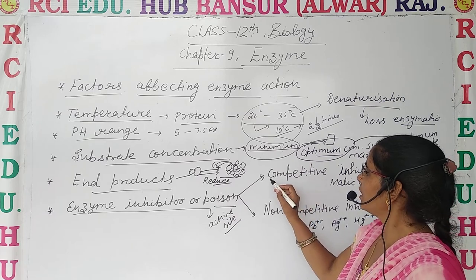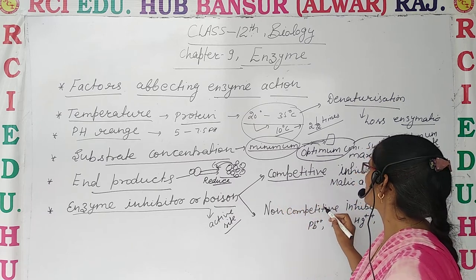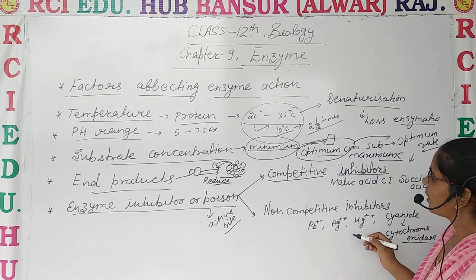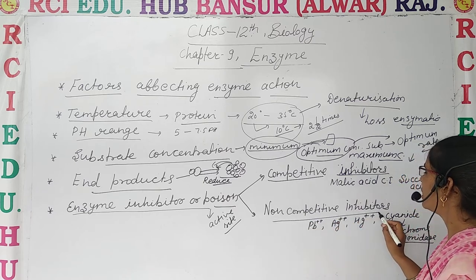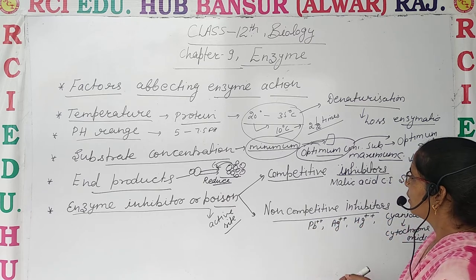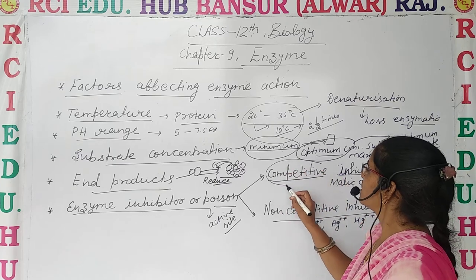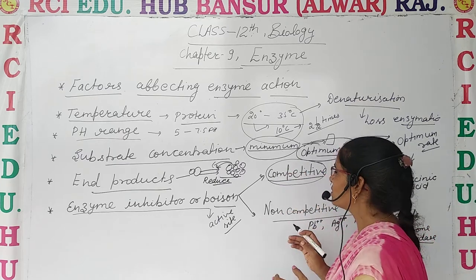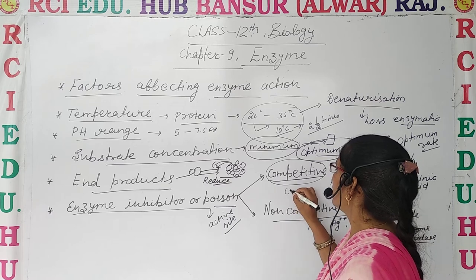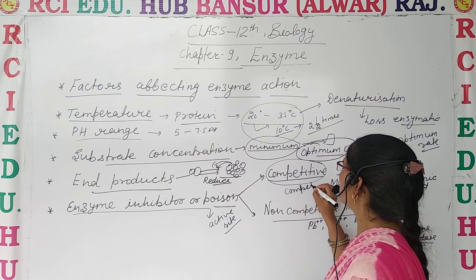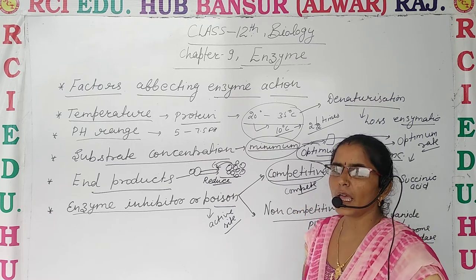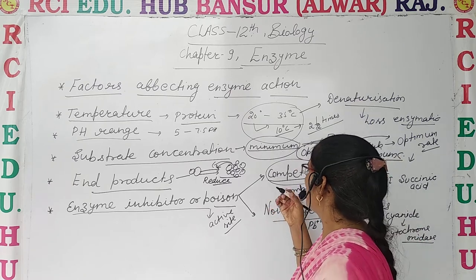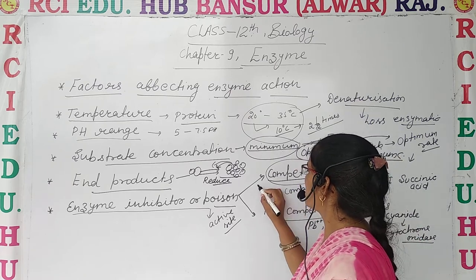Enzymatic inhibition is of two types: competitive inhibitors and non-competitive inhibitors. Competitive inhibitors, as the name suggests, compete with the main substrate because they have the same configuration or same shape as the main substrate.